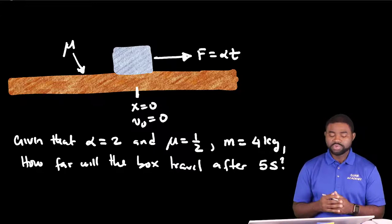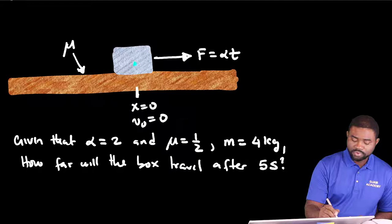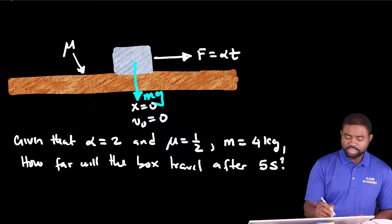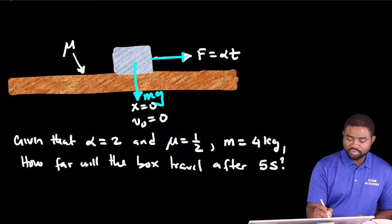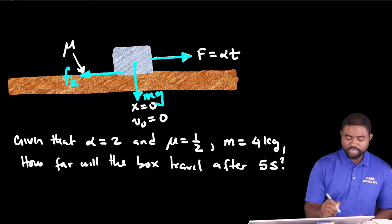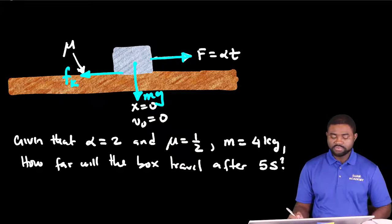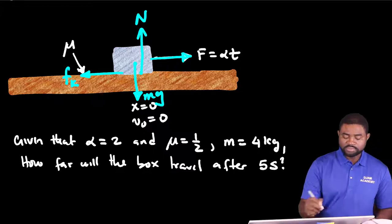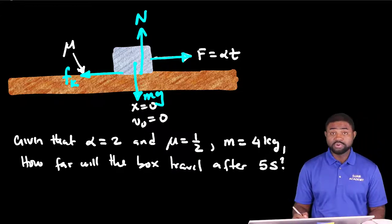Let's start by doing our free body diagram. We have the weight acting vertically downwards, the force F, kinetic friction Fk acting to the left, and the normal force acting vertically upwards from the bottom of the block.